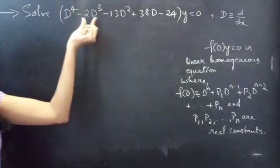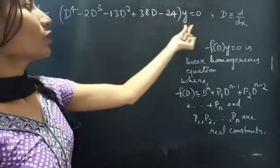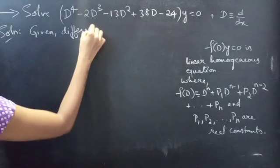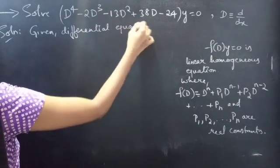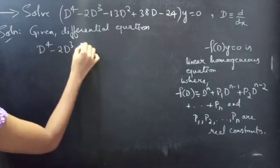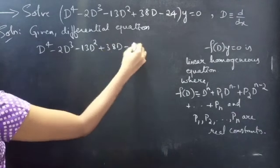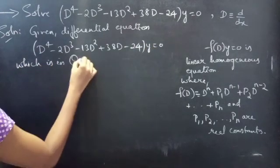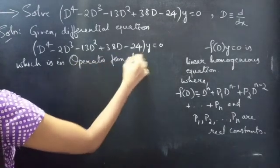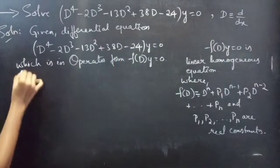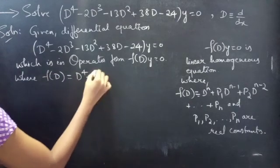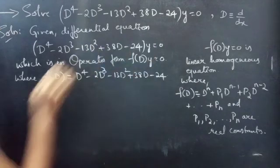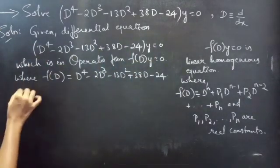Problem: Solve d⁴ minus 2d³ minus 13d² plus 38d minus 24, times y, equals 0. Given this differential equation, it is of operator form f(d)·y = 0, where f(d) = d⁴ - 2d³ - 13d² + 38d - 24. We are going to find the general solution using the auxiliary equation.